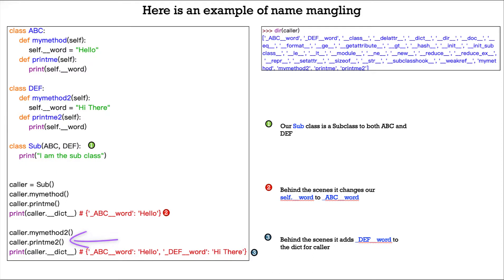When we again do caller.double underscore dict double underscore, we get not only the single underscore ABC double underscore word, but now we get the single underscore DEF double underscore word. So again, it prepends the class name to the double underscore word mangled name that we gave it.